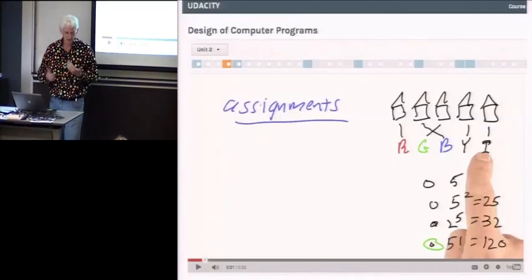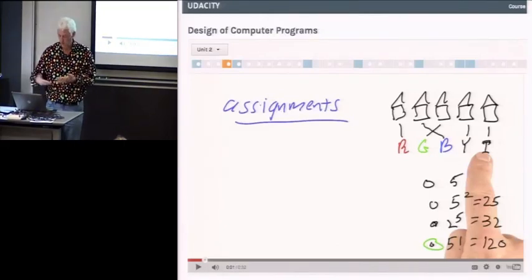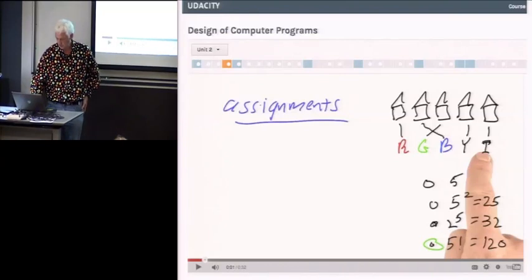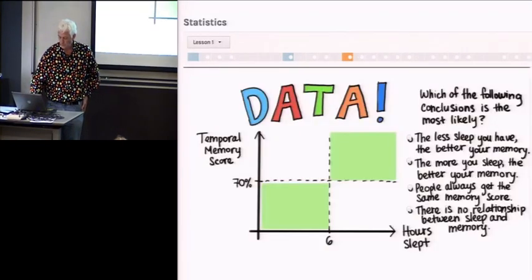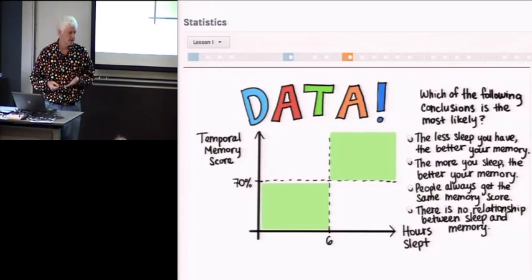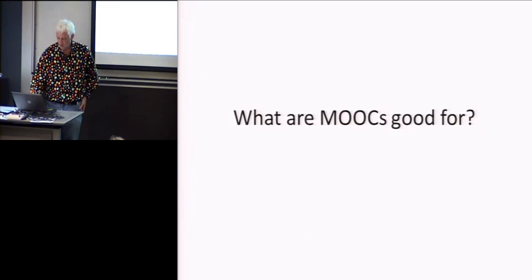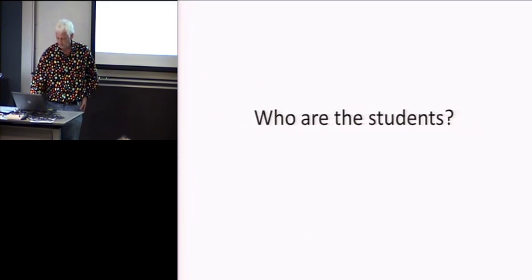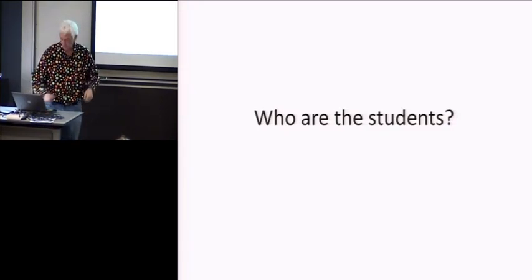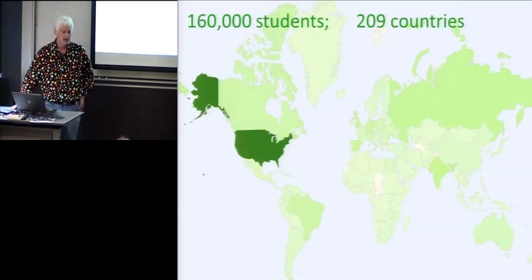It was our turn to teach the AI class. And we said, in addition to teaching it at Stanford, let's open it up to the whole world. And turns out the world was interested and started to sign up for it. And since then, there have been lots of other classes. So we've got Coursera and Udacity and edX. Well, in our class, we had 160,000 students from 209 countries sign up. And in the end, 23,000 of them made it all the way through.